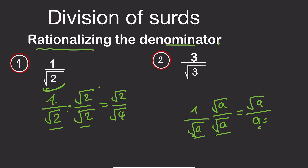So root 4 is also the same as 2. So our answer is root 2 over 2. It means if you use your calculator, all the answers will be the same — they are equal.